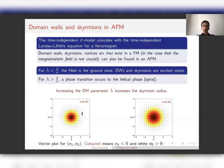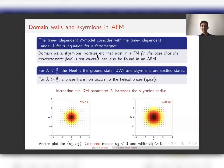Therefore, what we know about static domain walls, skyrmions, and vortices in the ferromagnet can be carried over to an antiferromagnet. Domain walls, skyrmions, and vortices exist in exactly the same way in an antiferromagnet, at least when the magnetostatic field is not crucial.